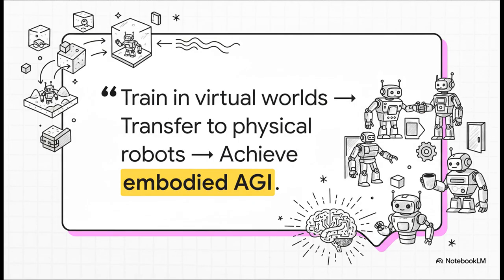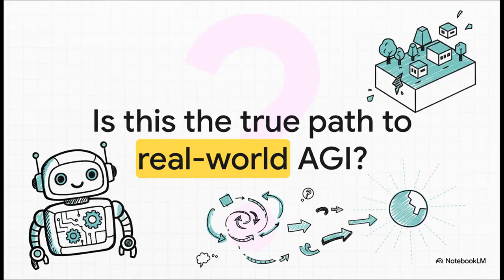So when you step back and look at the whole picture, Google's vision here is crystal clear. Step one, train the AI in millions of different virtual worlds where it's safe and fast to learn. Step two, transfer those general skills into physical robots. And the ultimate goal, embodied AGI. An AI that doesn't just think like us, but can actually act and exist right alongside us, in our world. Which really leaves us with one massive question, doesn't it? With everyone so focused on making language models bigger and better, is this the real path forward? Is an AI that learns by doing, by acting and adapting in simulated worlds, going to be the thing that finally breaks AGI out of the computer and into our reality? I guess we'll have to wait and see.